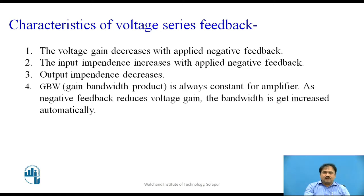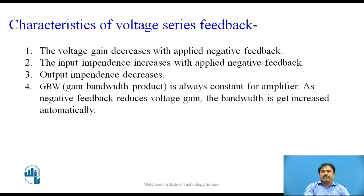To summarize the properties of voltage series feedback: the voltage gain is decreased; the input impedance increases with feedback; and the output impedance decreases with feedback. One more important point is the gain-bandwidth product (GBW), which is always constant for an amplifier. Since the voltage gain with feedback decreases, the bandwidth automatically increases — which is a very desirable outcome.